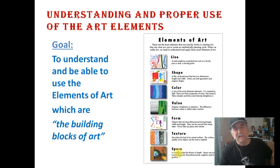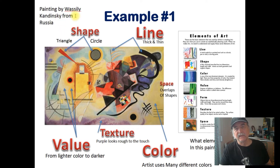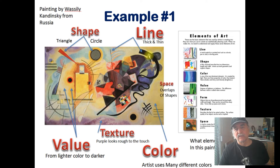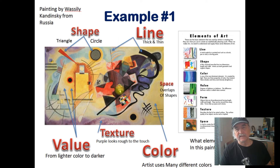Let's take a look at an example. This is a painting by Wassily Kandinsky, who was originally from Russia. Right away we get into something called line. You can see examples of thick and thin lines — this one is curvy, and as it curves down it becomes thinner and thins out completely at the end. We have a completely straight line here, and some lines that are angled and overlapping.